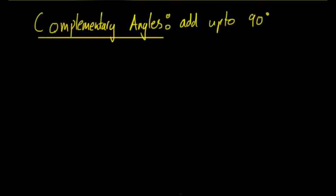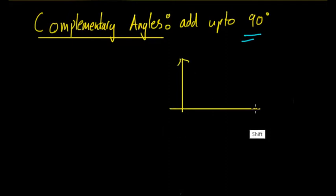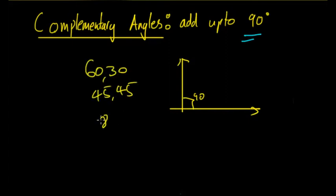So what about complementary angles? Complementary angles add up to 90 degrees — before that was 180, but complementary is 90 degrees. That means the two angles will form a right angle. Examples include 60 and 30, 45 and 45, 85 and 5, etc. The important thing is that they add up to 90 degrees.